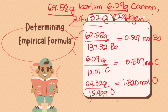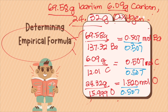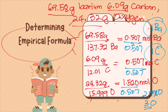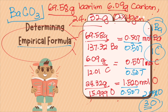Now we calculate the whole number mole ratio. The smallest value is barium at 0.507, so we divide everything by 0.507. Barium gives 1, carbon also gives 1, and oxygen gives 2.998, which we round to 3. So we have 1 barium, 1 carbon, and 3 oxygen. Therefore, the empirical formula for this compound is BaCO3.